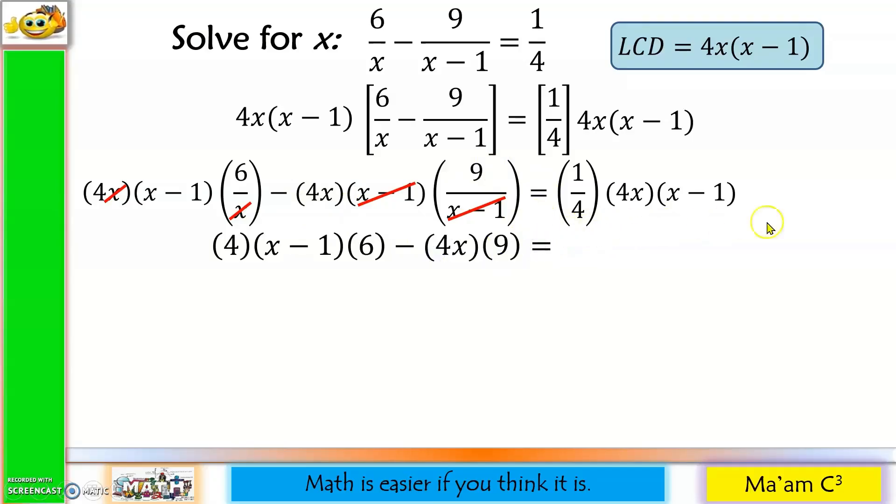Equals. On this group, we can cancel out 4. So we have 1 times x times x minus 1. Then let's apply the distributive property. I'll start with the constant first. 4 times 6 is 24 times x minus 1. And then I have minus 4x times 9 is 36x. Equals 1 times x is x, x times x is x squared, and x times negative 1 is negative x.